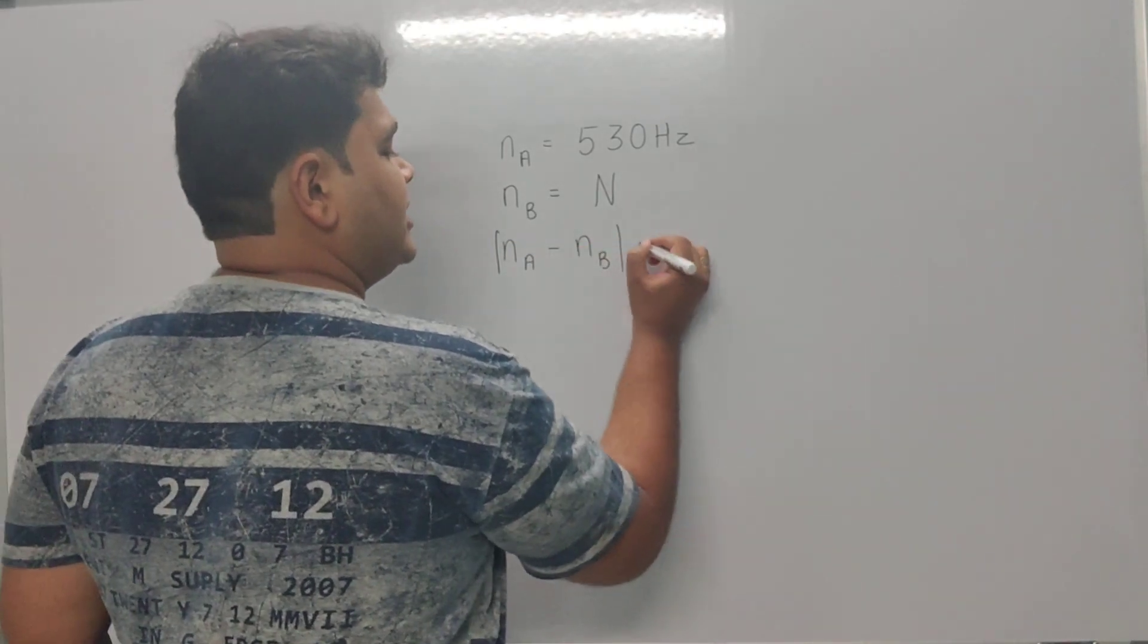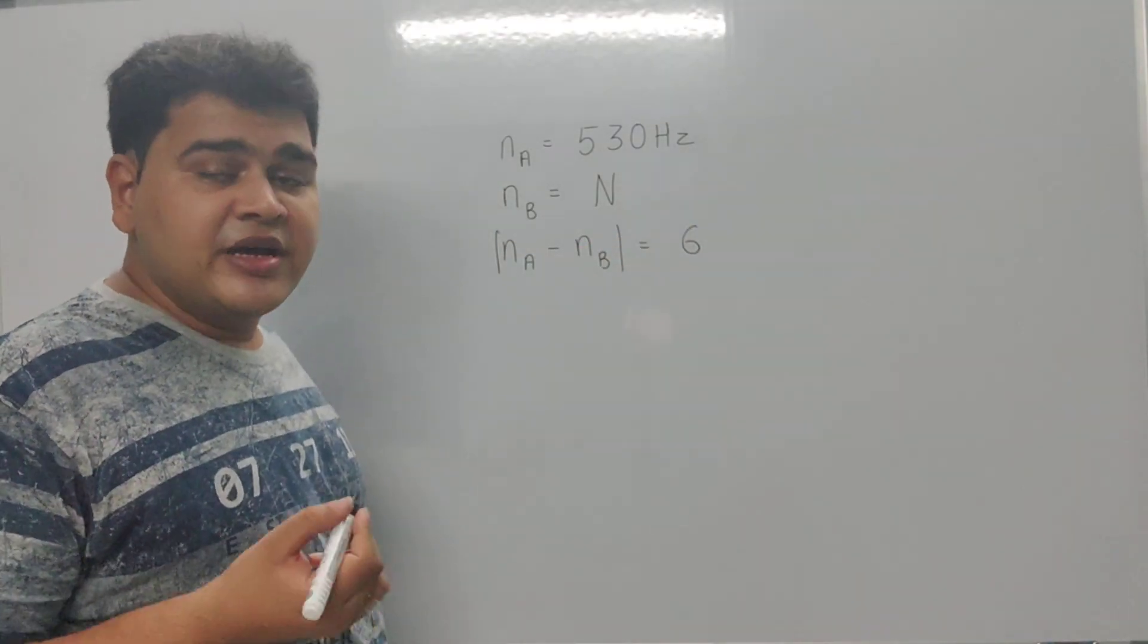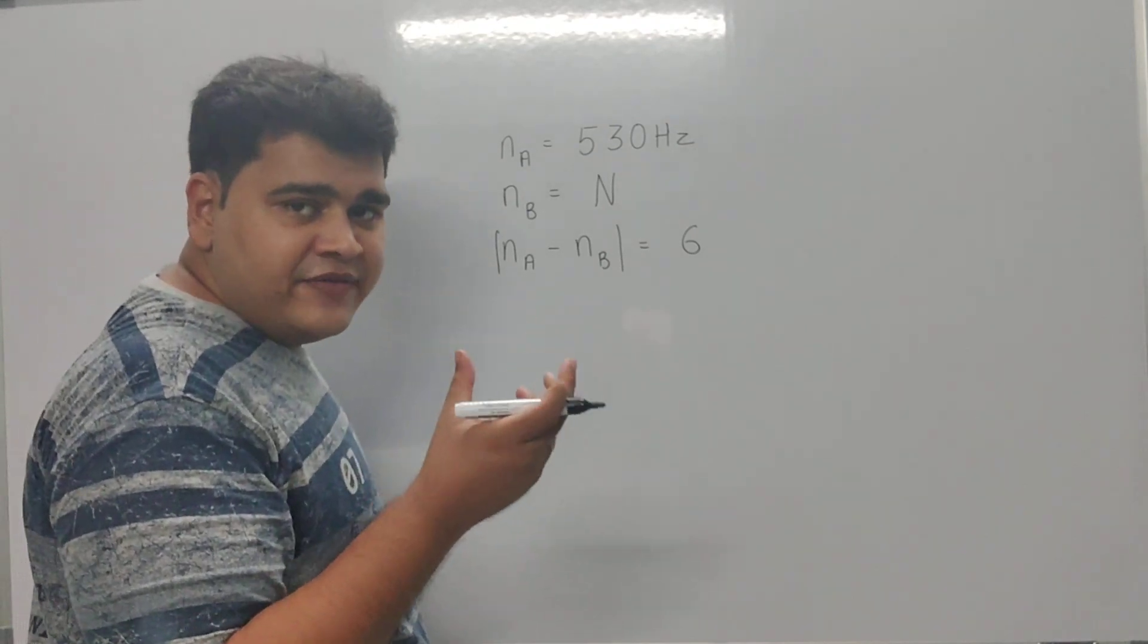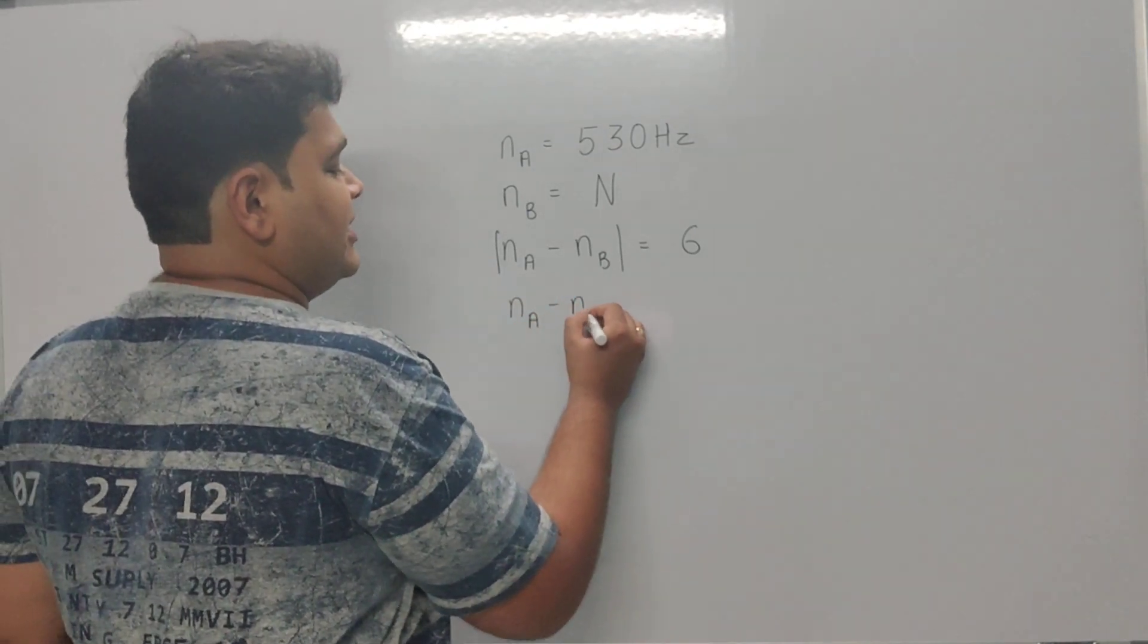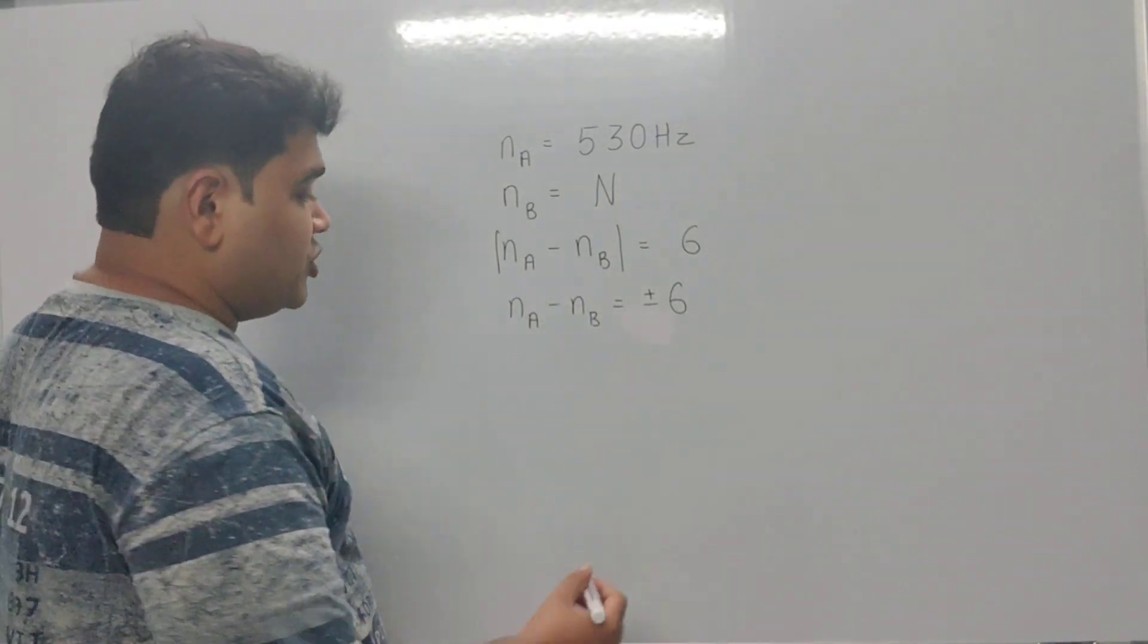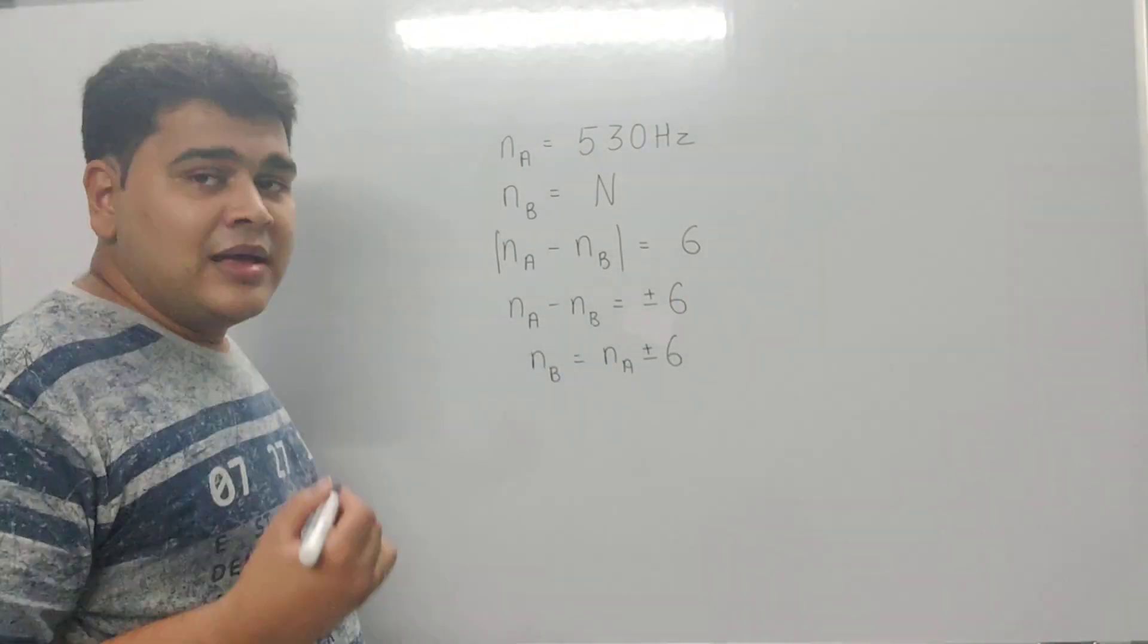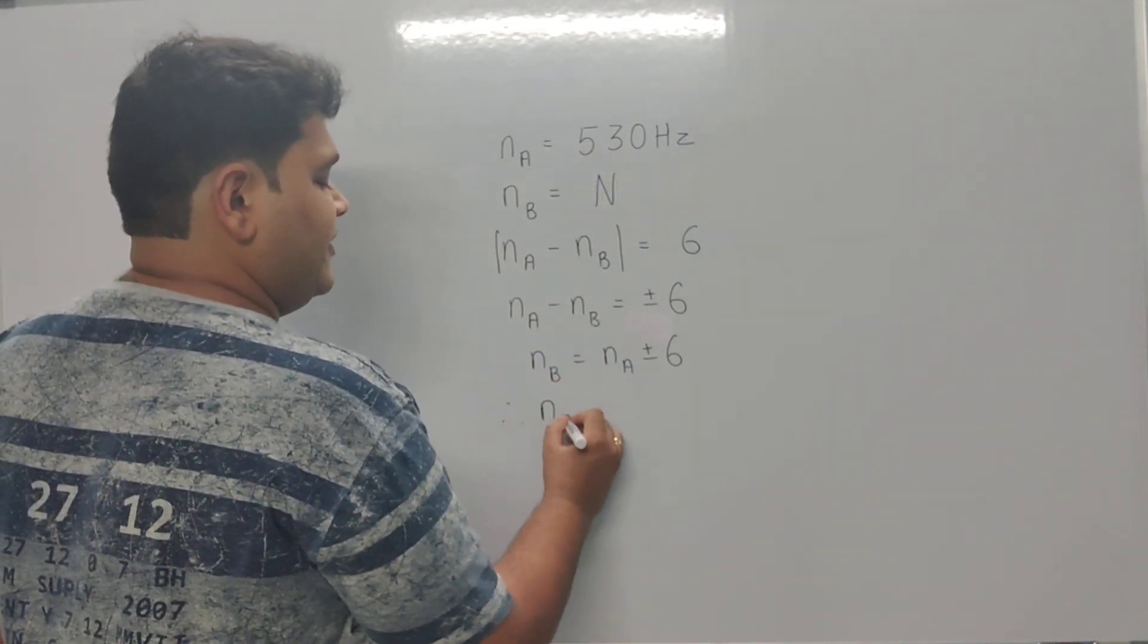Now if I assume this modulus indicates we don't know which one is greater, I can also say N_A minus N_B equals plus or minus 6, which means the value of N_B is going to be N_A plus or minus 6. Since N_A is 530, we can write N_B as 530 plus or minus 6.